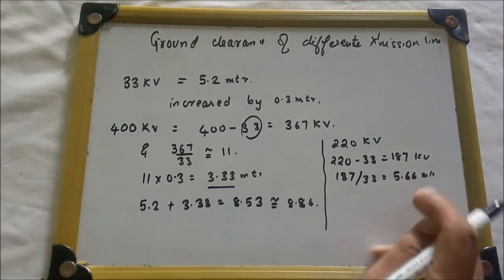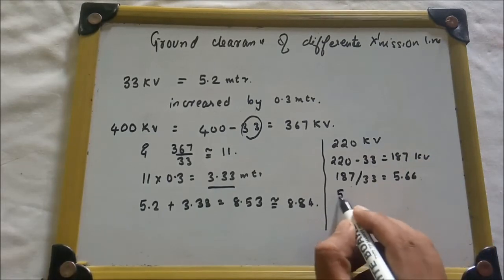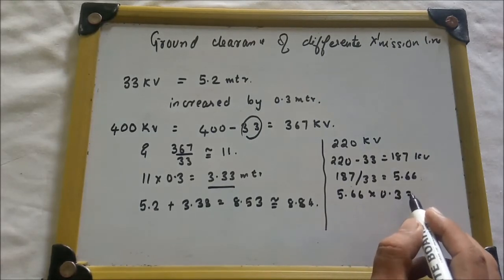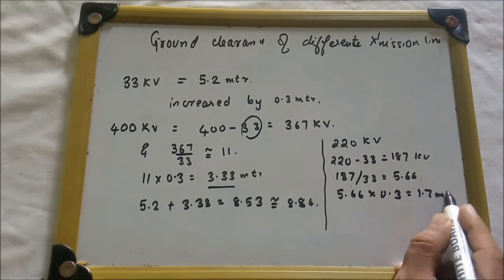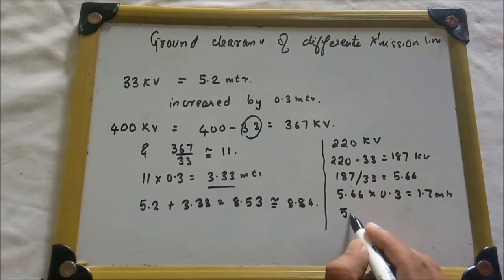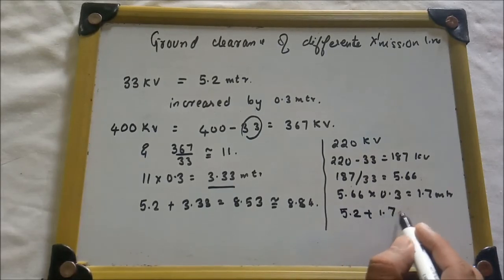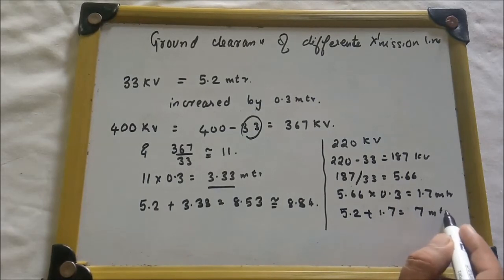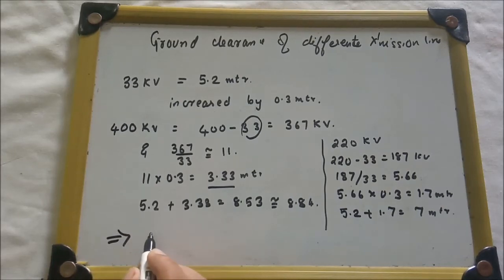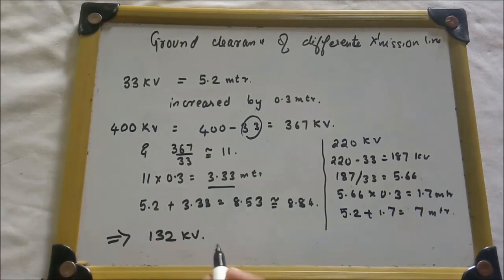Applying the same logic, for 220 kV we get approximately 7 meters. Now the question is: what will be the ground clearance of 132 kV? You have to solve and answer in the comment box.